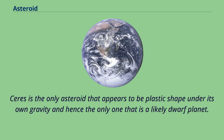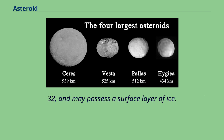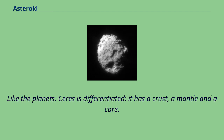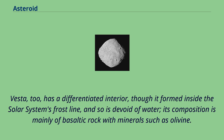Ceres is the only asteroid that appears to be plastic in shape under its own gravity and hence the only one that is a likely dwarf planet. It has a much higher absolute magnitude than other asteroids, of around 3.32, and may possess a surface layer of ice. Like the planets, Ceres is differentiated — it has a crust, a mantle, and a core. No meteorites from Ceres have been found on Earth. Vesta also has a differentiated interior, though it formed inside the solar system's frost line and so is devoid of water; its composition is mainly basaltic rock with minerals such as olivine.